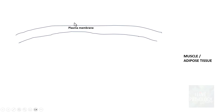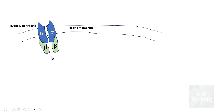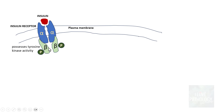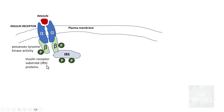Let us understand how insulin acts at the cellular level. This is a plasma membrane — think of it as a muscle or adipose tissue cell. In the plasma membrane, you have insulin receptors with an alpha unit and a beta subunit. The beta subunit possesses tyrosine kinase activity. Once insulin binds to the insulin receptor, there is phosphorylation of the beta subunit of the insulin receptor, which then helps in phosphorylation of other proteins called insulin receptor substrate proteins, or IRS proteins.